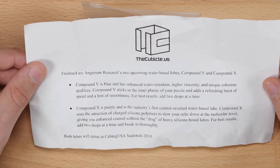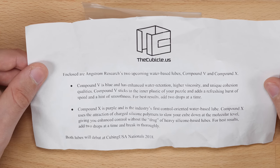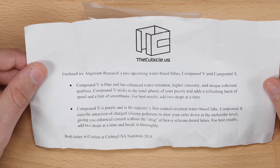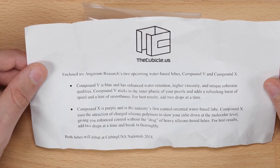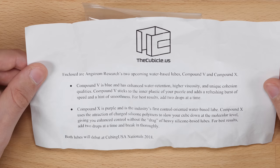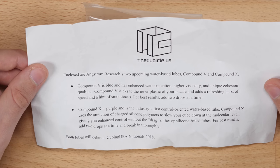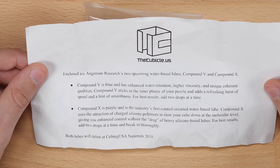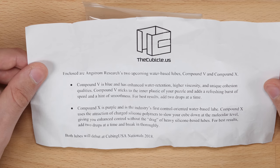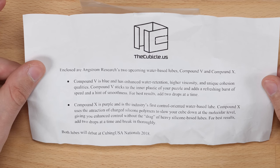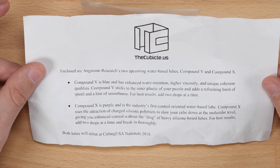Then it says Compound 10 is purple and is the industry's first control-oriented water-based lube. Compound X uses the attraction of charged silicone polymers to slow your cube down at the molecular level, giving you enhanced control without the drag of heavy silicone-based lubes. For best results, add two drops at a time and break in thoroughly. Both lubes will debut at Cubing USA Nationals 2018.